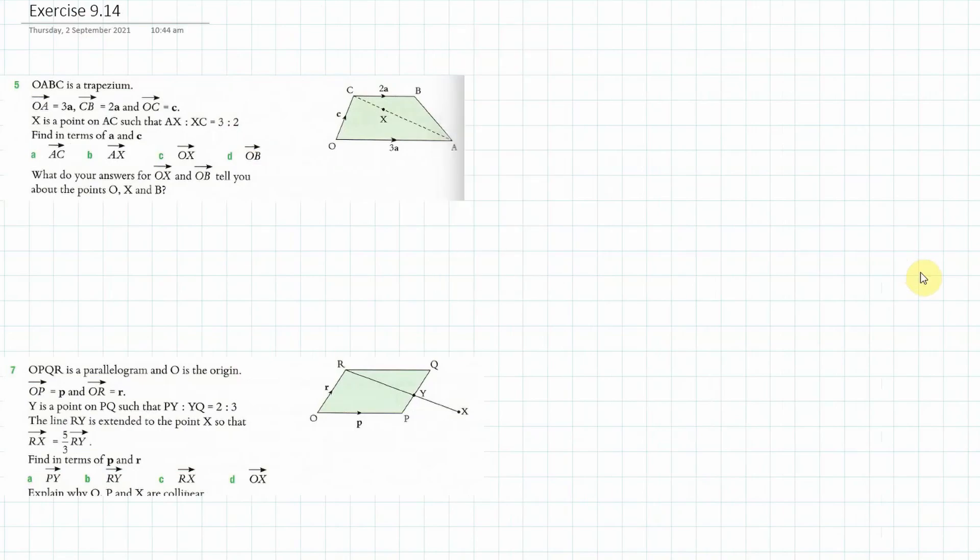So we've got this trapezium and we know that OA is 3A and CB is 2A, the vector. And you can see they're parallel, they're just multiples of each other. We know that X is a point on AC, such that AX to XC is 3 to 2. And first of all, we've got to find AC. So that should be pretty easy.